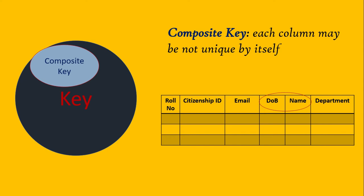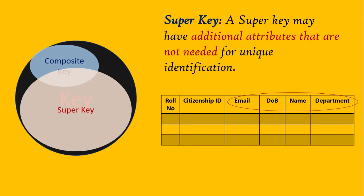Next comes composite key. If multiple attributes together create a key — that is, a set of attributes creates a key — we call it a composite key. In a composite key, each column may not be unique by itself. For example, date of birth and name together may be used to identify a student in a student database table. Two persons can have the same date of birth, so one attribute may not have a unique value across all fields. This is what a composite key is.